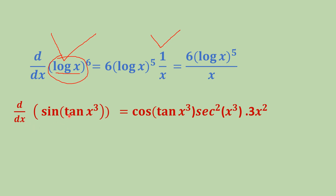The derivative of sin(tan(x cubed)): first, because it is sine, the derivative gives cos(tan(x cubed)). Then calculate the derivative of tan(x cubed), which is secant squared(x cubed). Then calculate the derivative of x cubed, which is 3x squared. So step by step: cos(tan(x cubed)) times secant squared(x cubed) times 3x squared.